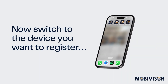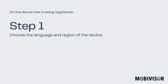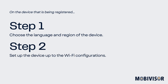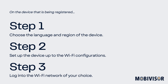Now switch to the device you want to register. On the device that is being registered, you need to follow three steps. Step 1: Choose the language and region of the device. Step 2: Set up the device up to the Wi-Fi configuration. Step 3: Log into the Wi-Fi network of your choice.